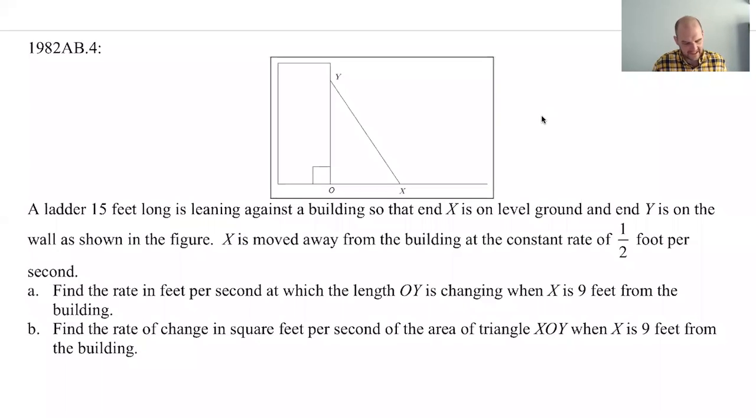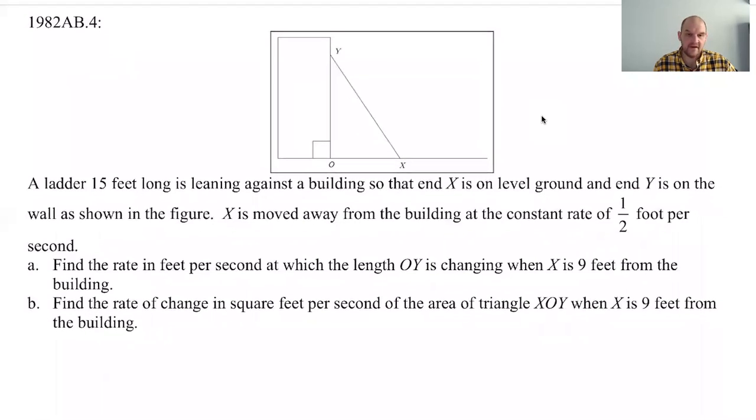In this video, we're going to try to do 1982 AB number 4 from the AP Calculus exam. It's a related rates problem, and that's why we're doing it right now, because I am currently running through a lot of related rates for response questions. We have this picture. It looks like it's just going to be a triangle problem.